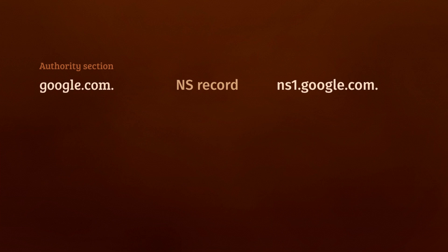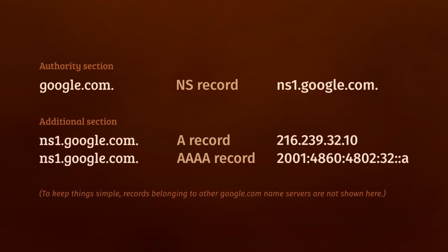Once again, this is the same chicken and egg problem. The glue records have us covered. The .com name server can include an additional A record in the response, telling us the IP address of ns1.google.com.